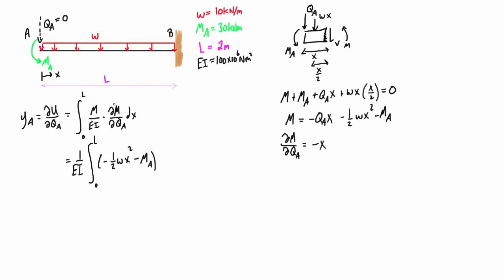That is the expression M once we've set QA equal to zero. And then when we multiply in the partial derivative of M with respect to QA, that's just negative X, and then just put dx on the end.